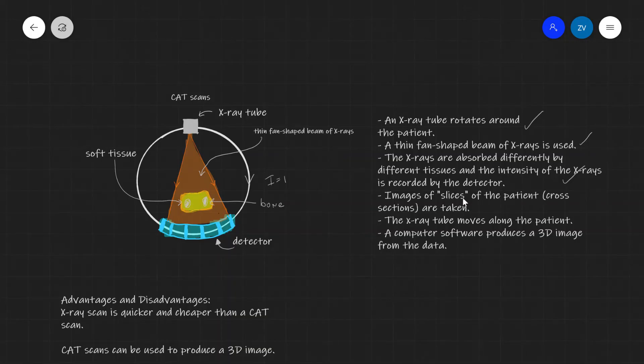So images of the slices of the patient are taken. Now the x-ray will then move along the patient. So this will be in the direction either out or into the board over here. So you have to imagine this in 3D. Now this allows the computer software to produce a 3D image.